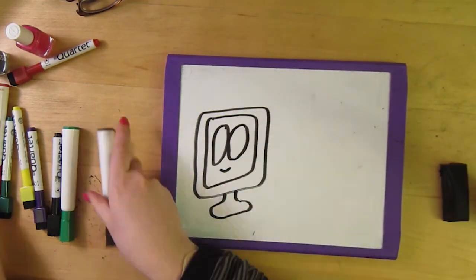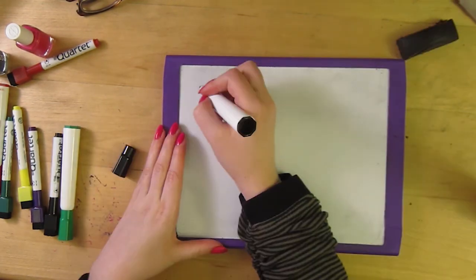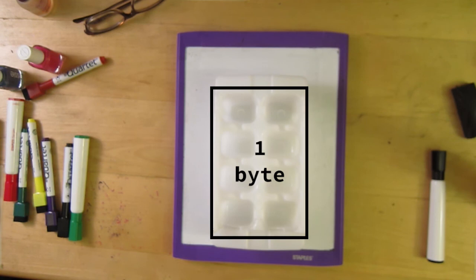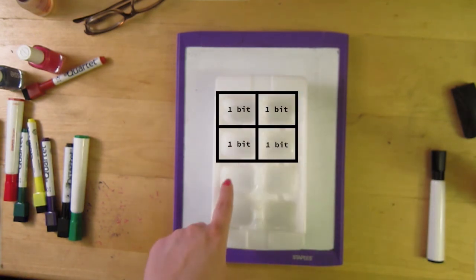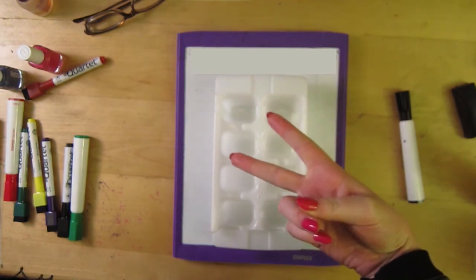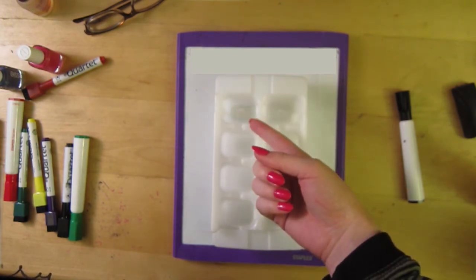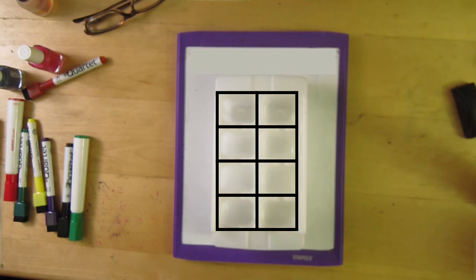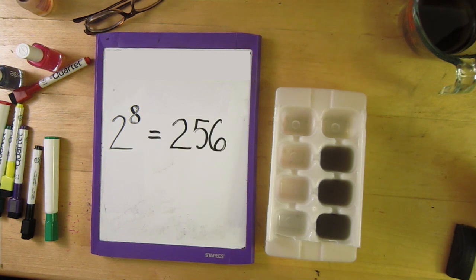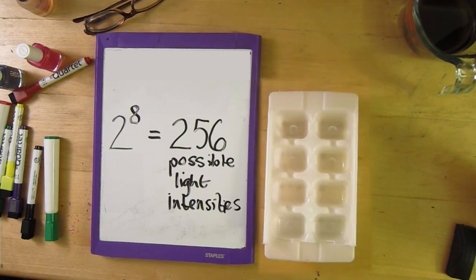Technology remembers our image using bytes. Each pixel is represented by one byte in a device's memory. A byte is equal to 8 bits. Since there are two combinations that each bit can have, which are empty or full, and there are 8 bits, we can raise 2 to the 8th power, and we get 256 possible light intensities.